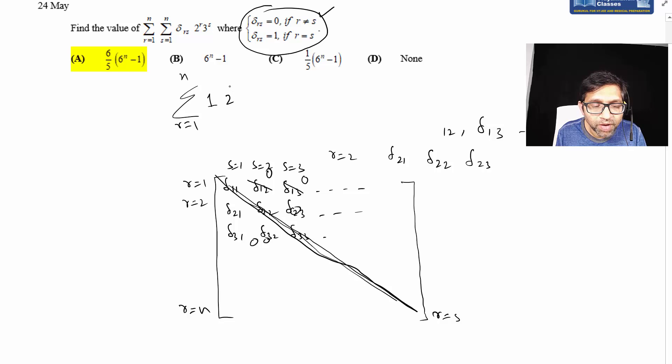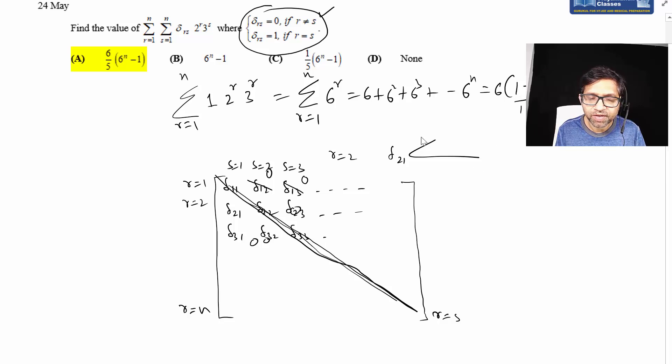This is nothing but summation where r varies from one to n of 6 to the power r. This gives us 6 plus 6 squared plus 6 cubed up to n terms. This is a GP sum: a(1 - r^n)/(1 - r), which equals 6(1 - 6^n)/(1 - 6).